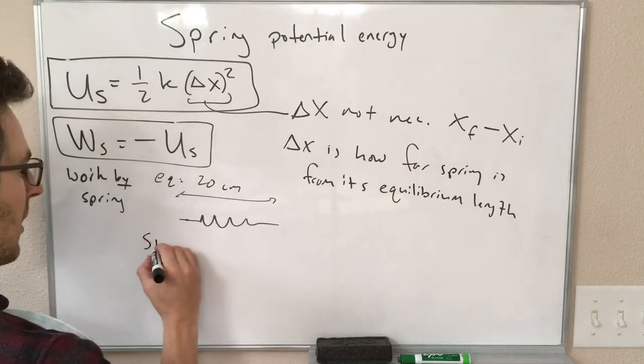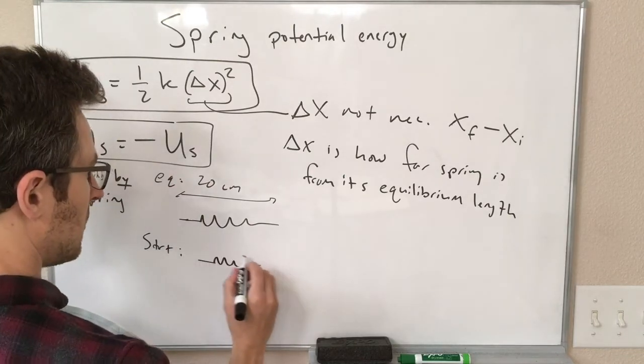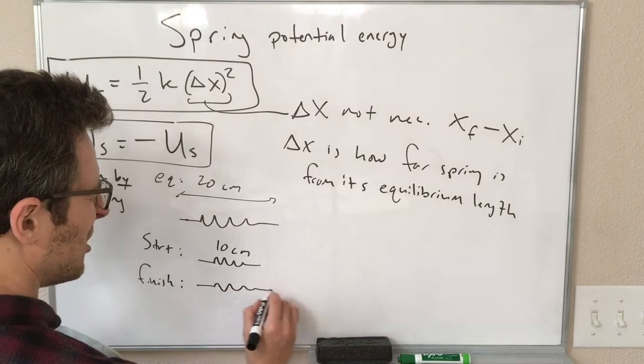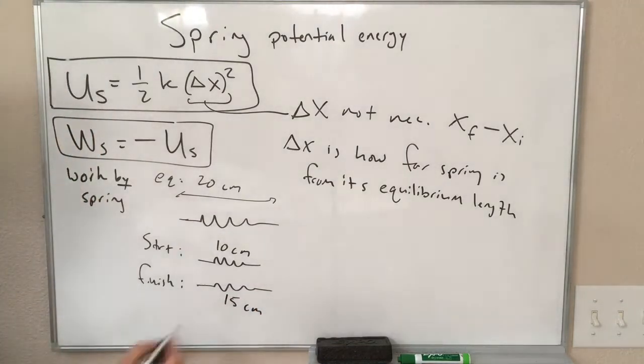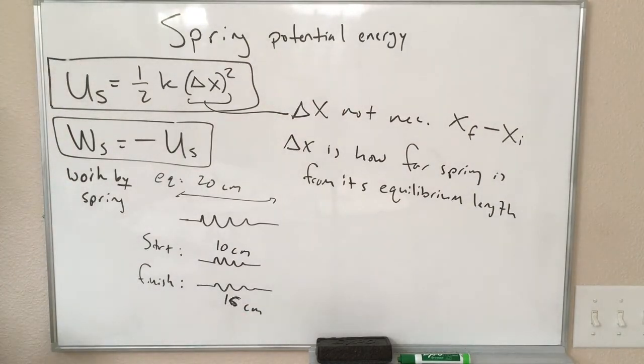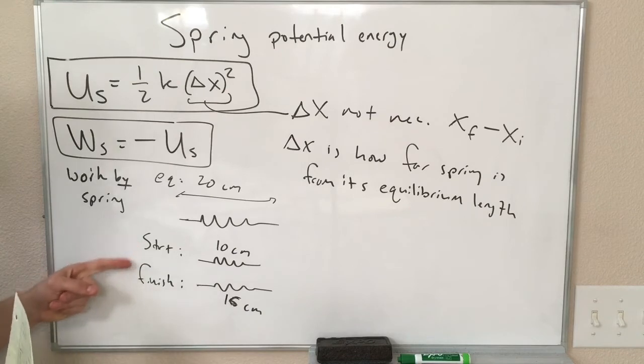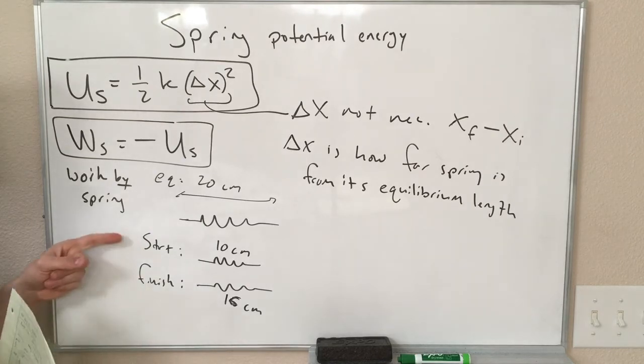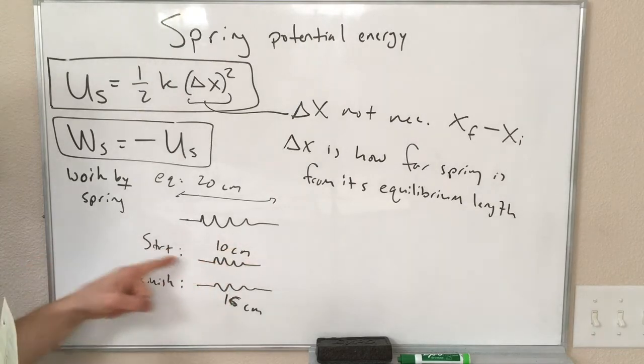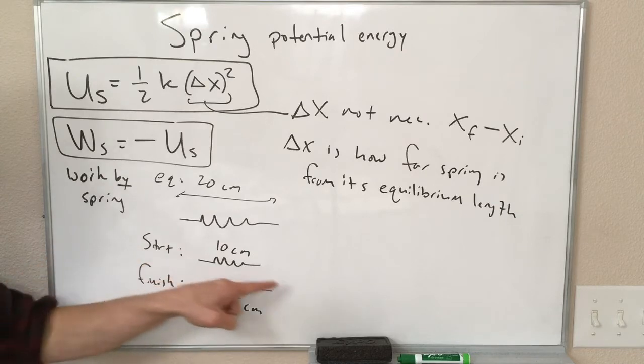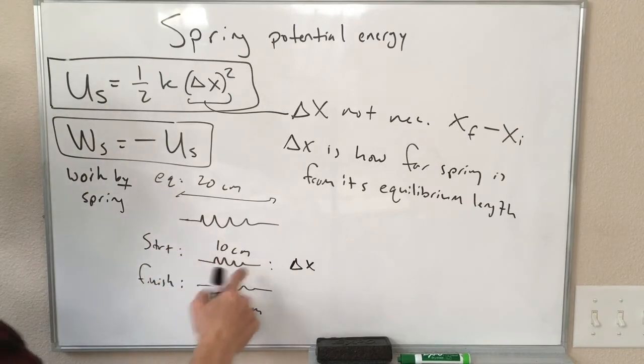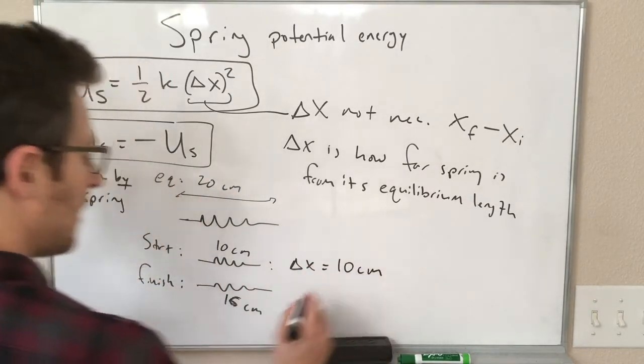In other words, if I start out with a spring that, let's say my spring has an equilibrium length of 20 centimeters, and in a problem I start with it compressed to 10 centimeters, for the start condition delta x is 20 minus 10, the difference between these, which is 10 centimeters.